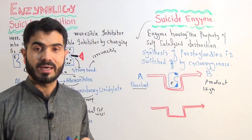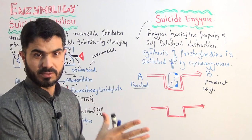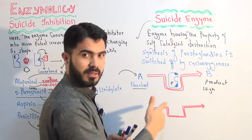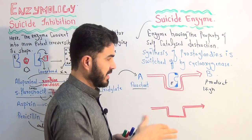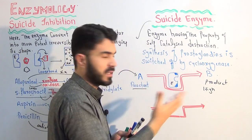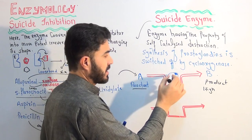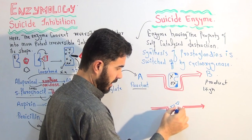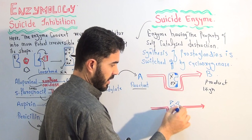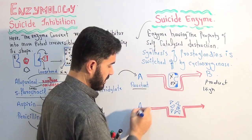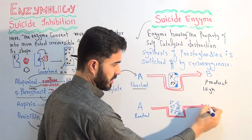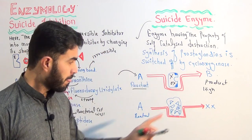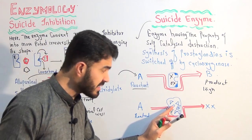In order to stop this process, we cannot stop the enzyme by other means like feedback inhibition. In this case, it is the enzyme's own property — it is the characteristic of that enzyme that it will self-catalyze its own destruction. The enzyme will not stop, but it will be broken down and totally destroy itself. Now we have reactant A, but this reactant is not going to convert into product B because the enzyme is no longer there. This kind of enzyme that performs suicide is called a suicidal enzyme.